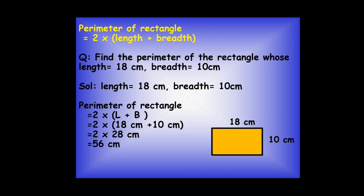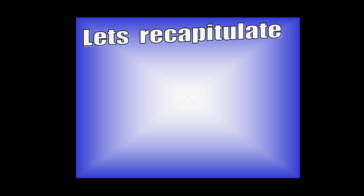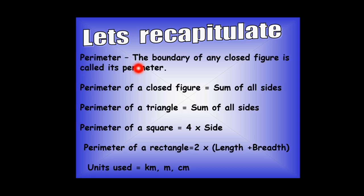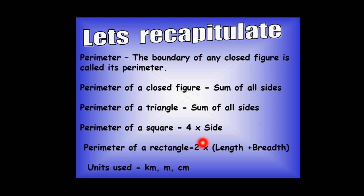So children, let's recapitulate what we have learned today. Perimeter is the boundary of any closed figure and we calculate it by taking the sum of all sides. The perimeter of a triangle is the sum of all sides; an equilateral triangle is 3 times side; a square is 4 times side; and a rectangle is twice the sum of its length and breadth. The units used are kilometer, meter, and centimeter. Thank you for watching — stay home, stay safe.